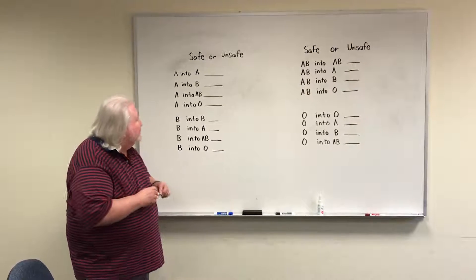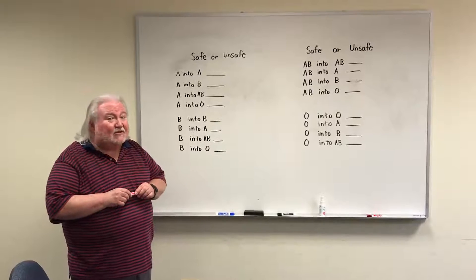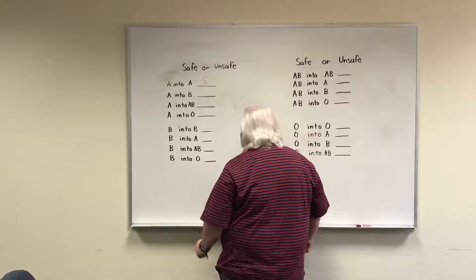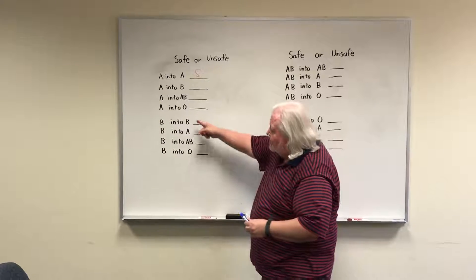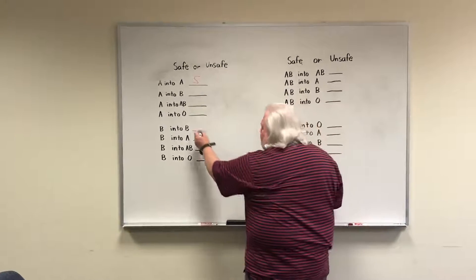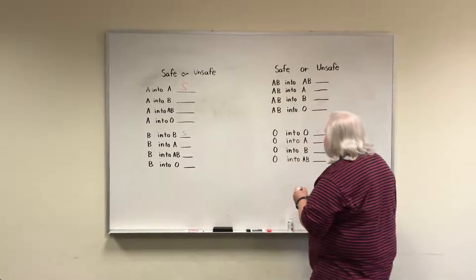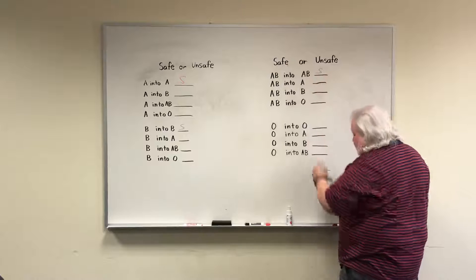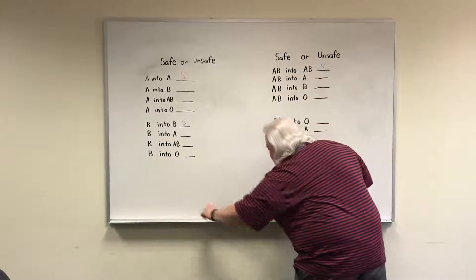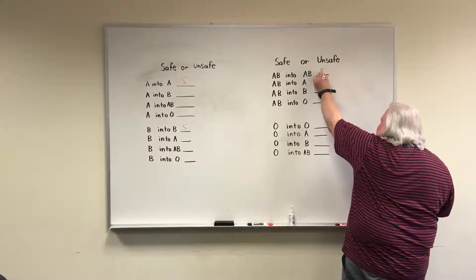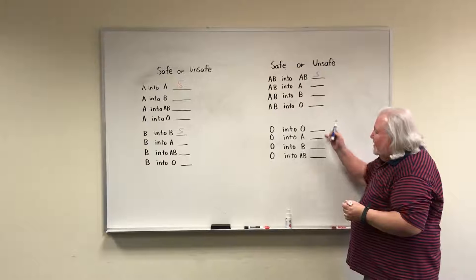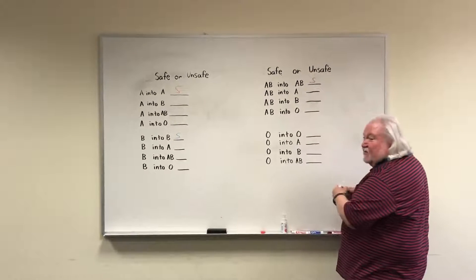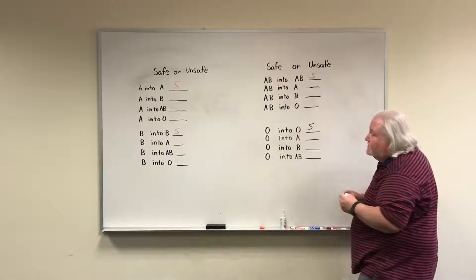We can go ahead and fill out some entries. A into A — you know it's going to be safe, right? B into AB — we know that's going to be safe. AB into AB — that's going to be safe. And even though it's just plain water, O into anything — that's safe, right?